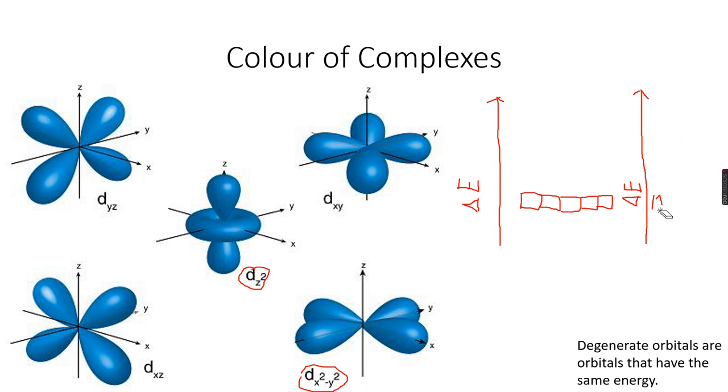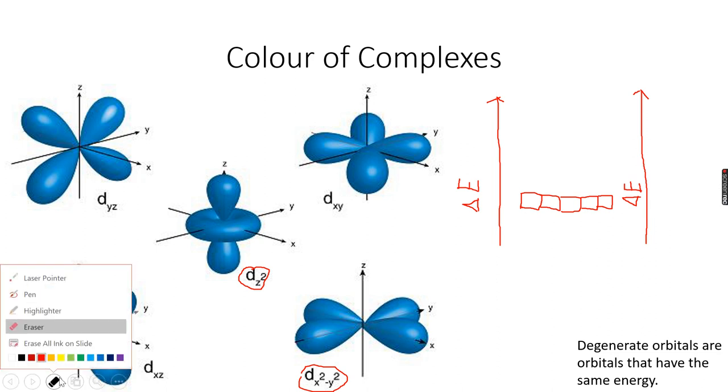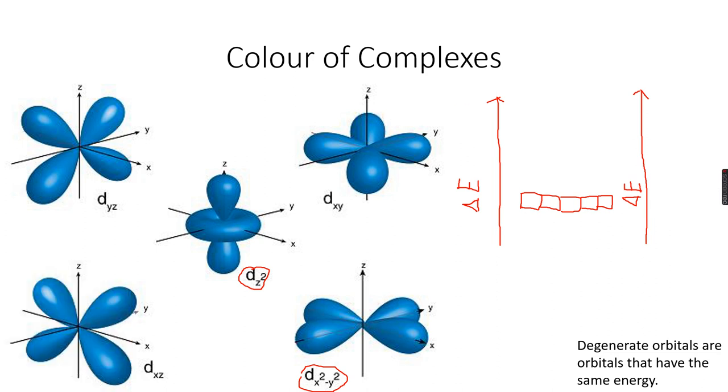In the case of tetrahedral complexes, we again get splitting, but this time we have the dx squared minus y squared and dz squared orbitals in the lower energy level, and we have the dxy, dxz, and dyz orbitals in the higher energy level.